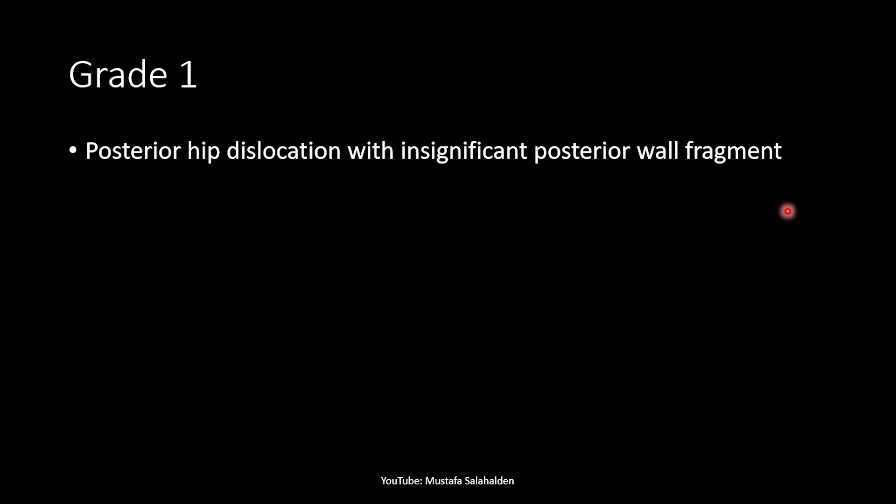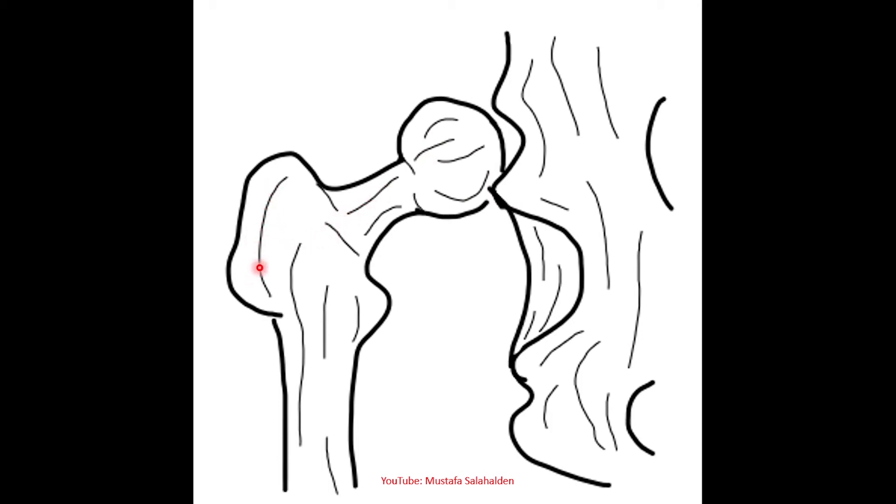In grade 1 there is a posterior hip dislocation with an insignificant posterior wall fragment. There is a dislocation present in all grades, but here it is with an insignificant posterior wall fragment. This drawing shows the pelvic bone, the hip bone, the femoral head, femoral neck, greater trochanter, lesser trochanter, and femoral shaft. The femoral head is not sitting in the acetabulum, and in this grade there may be insignificant fragments.